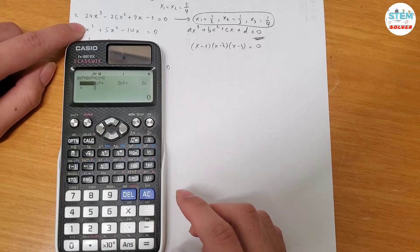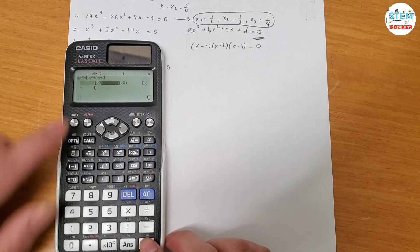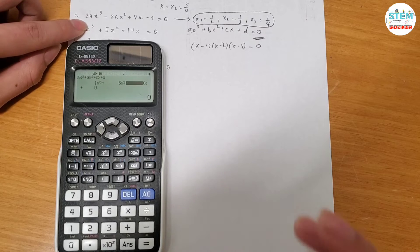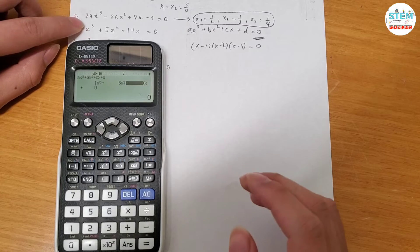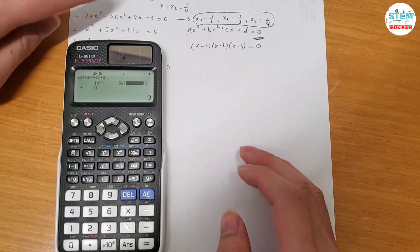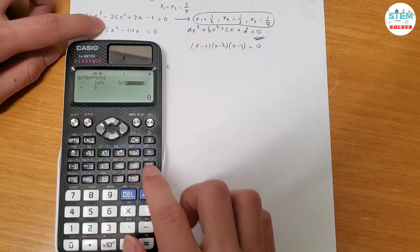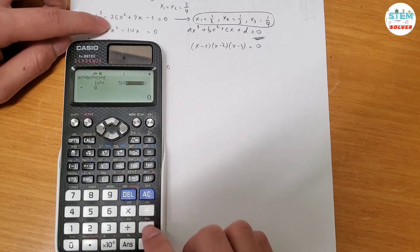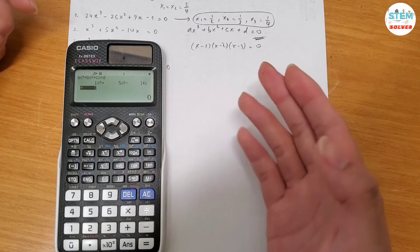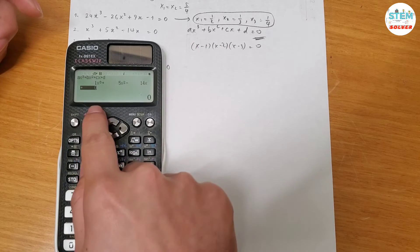Now my x cubed coefficient is 1, 5. Keep in mind that you have to insert the correct coefficient corresponding to the variable. So we have x cubed x squared x, so x cubed I have 1, x squared I have 5, x I have negative 14, and what about the constant? I have no constant, that means 0, so that's why I leave it 0 here.